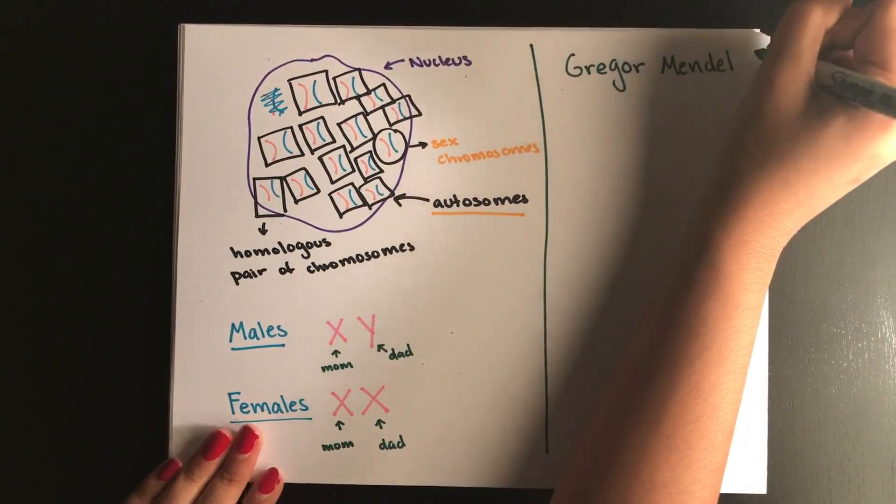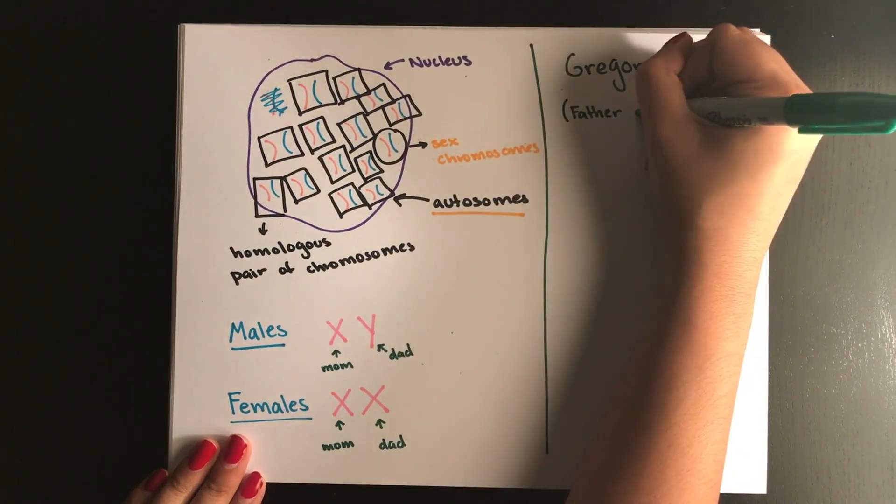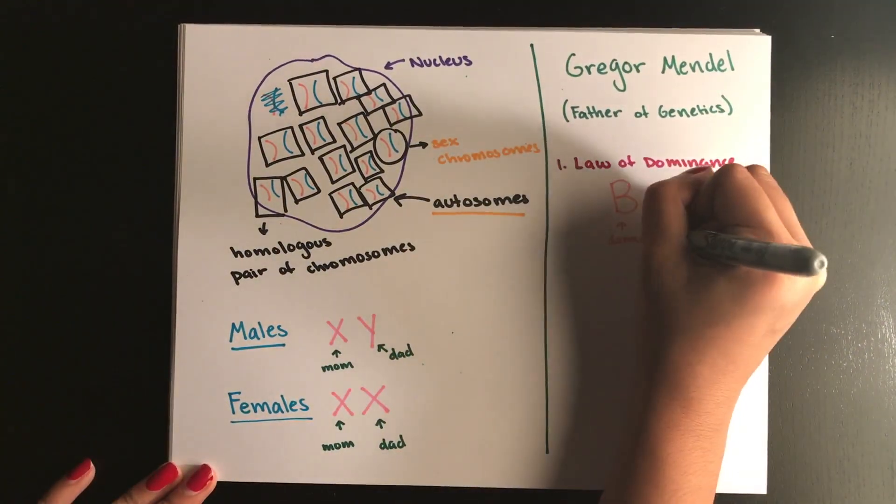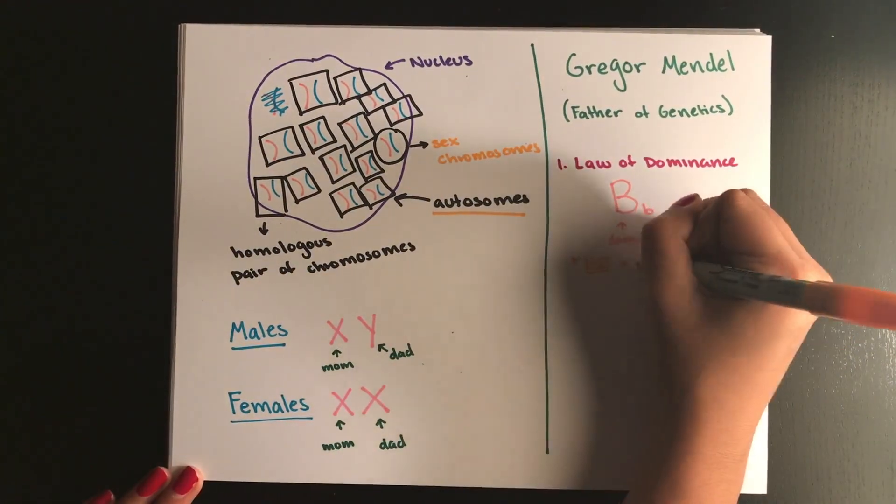Gregor Mendel is known as the father of genetics and he came up with three laws after working with pea plants. The first law is the law of dominance which says that certain alleles are dominant to others in a monohybrid cross.